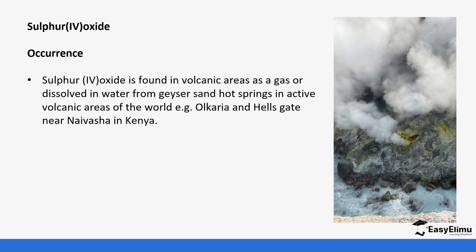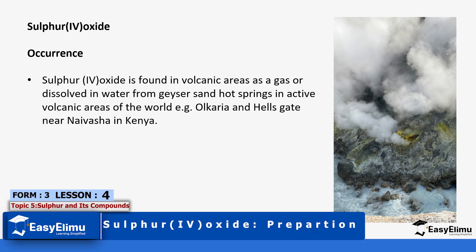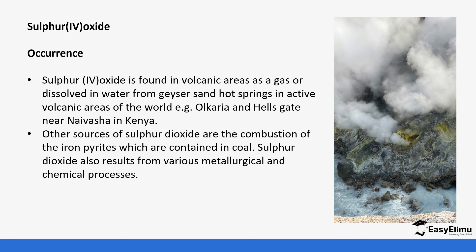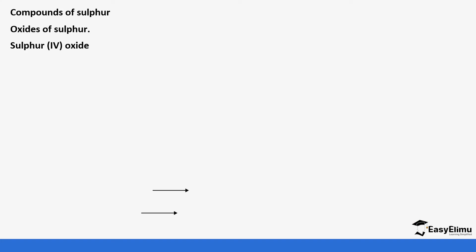Sulfur dioxide is one of the oxides of sulfur. We have two oxides of sulfur: sulfur dioxide and sulfur trioxide. Sulfur dioxide is usually found in volcanic areas as a gas or dissolved in water, especially in hot springs with active volcanoes. An example in Kenya is Olkaria and Hell's Gates, where you notice a very pungent smell from the sulfur dioxide gas and acidic hot springs. Other sources include the combustion of iron pyrites, found in coal, and various metallurgy and chemical processes.